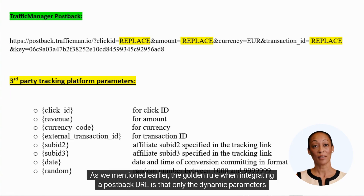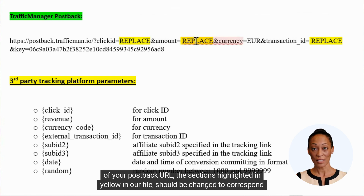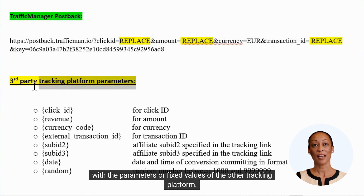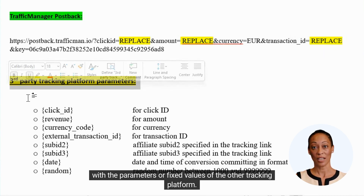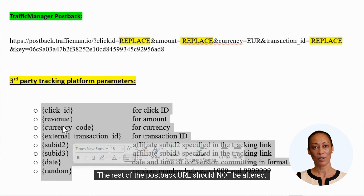As we mentioned earlier, the golden rule when integrating a postback URL is that only the dynamic parameters — the sections highlighted in yellow in our file — should be changed to correspond with the parameters or fixed values of the other tracking platform. The rest of the postback URL should not be altered.